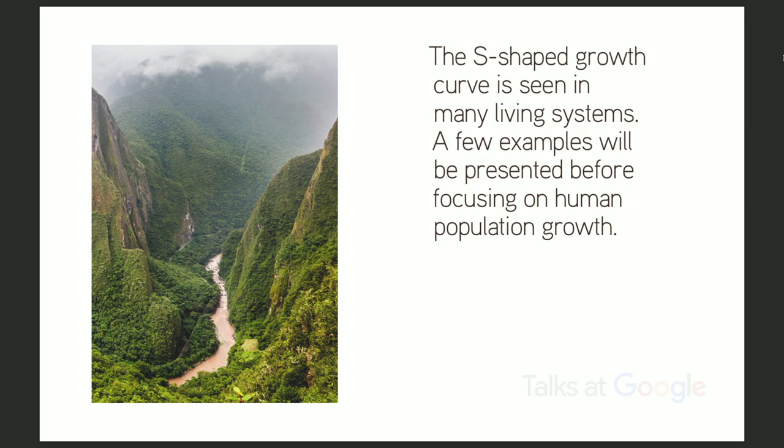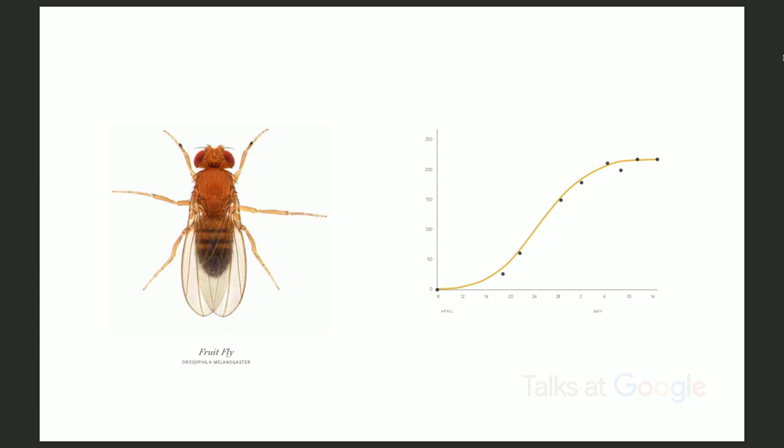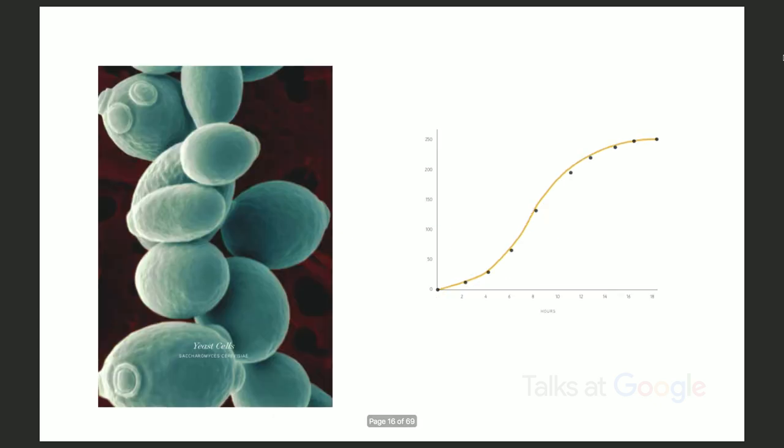We'll look at a couple of examples from laboratory models of this kind of growth and then go on and look at human population. This is a classic experiment by Raymond Pearl in the 1920s, introducing a small number of fruit flies into a bottle. You can see that the growth increases, accelerates, slows, decelerates, and reaches a plateau. If you take a population of yeast and put them in a petri dish, the same kind of thing happens, and you see exactly the same curve.